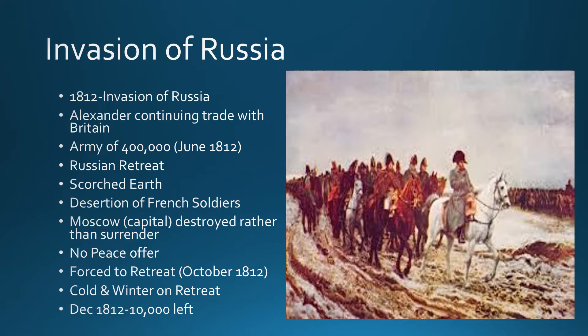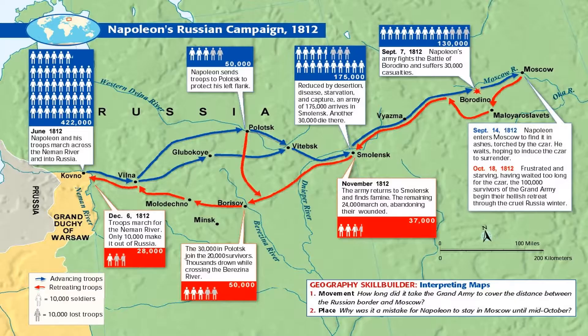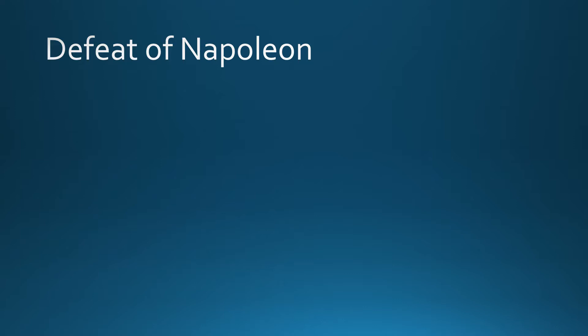Here we see Napoleon coming into Russia — very cold, the winter setting in. This graph shows how many troops are just completely diminishing at this point.